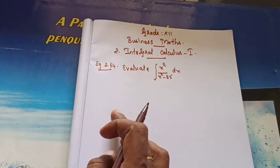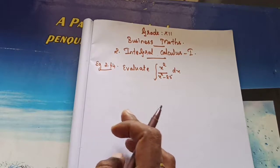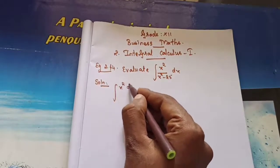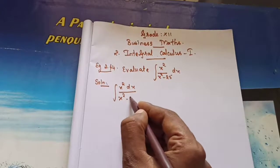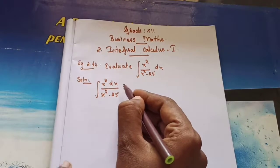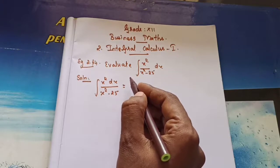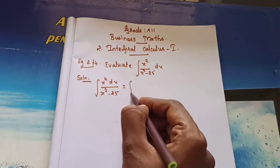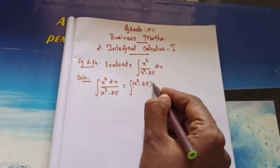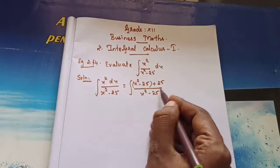Solution: integral of x² dx divided by (x² minus 25). What I am going to do is add and subtract 25 in the numerator. So integral of (x² minus 25 plus 25) divided by (x² minus 25) dx.